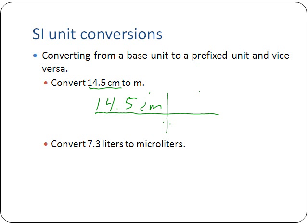Since what we want to do is convert units, the first thing we're going to do is write out the units we're converting to and from. In this case we want a unit that's not centimeters, so we have to get rid of centimeters somehow. Mathematically, to get rid of it we divide by that unit, so we write centimeters on the bottom. Whenever we divide by this, that's going to cancel centimeters.